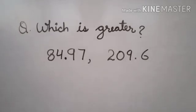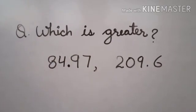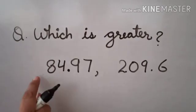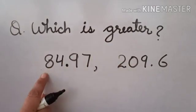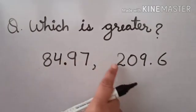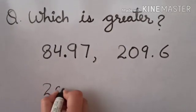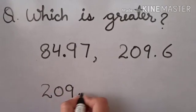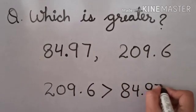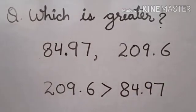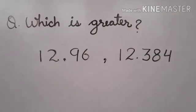Let us solve an example. Here the question is which is greater? We have the numbers 84.97 and 209.6. Let us compare the integral part of both the numbers. Now, 209.6 is greater than 84.97 because 209 is greater.